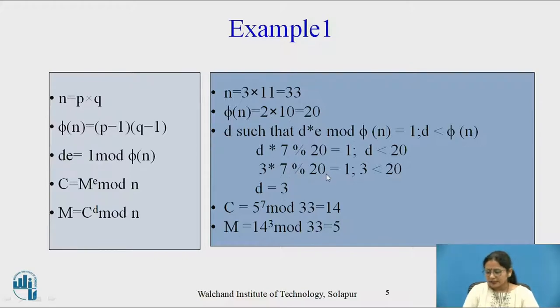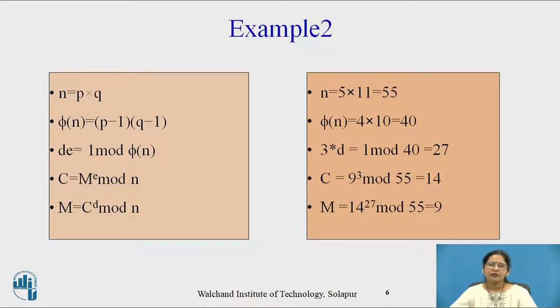Now check out the second example. What are the contents? p=5, q=11, so n=55. Phi of n equals (p-1) times (q-1) equals 40. e is given, so no time for selection of e. Now e is 3, so de equals 1 mod phi n. So 3d equals 1 mod 40.